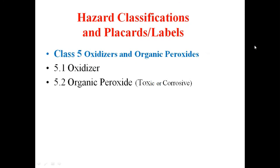Class 6 covers poisonous and infectious materials. This includes chemicals that are poisonous — metals or materials that are toxic — and infectious materials that can cause infection.